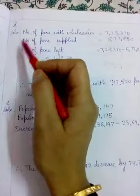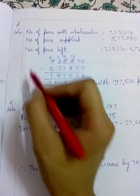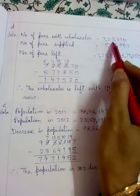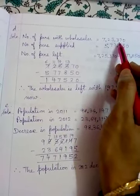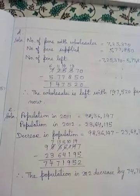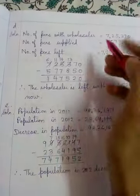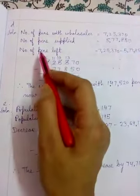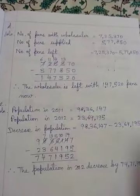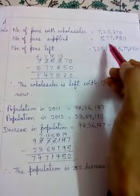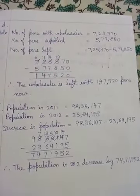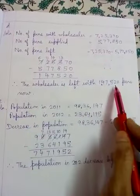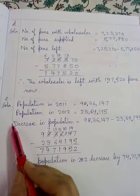Next question: A wholesale dealer has 7,25,370 pens. Wholesale means selling to small shopkeepers and retailers. He supplied pens to retailers. Now the question is: how many pens are left with the wholesale seller? Whenever we need to find leftover, we use subtraction. So we will take these two numbers, subtract them, get the answer, and write the conclusion line.